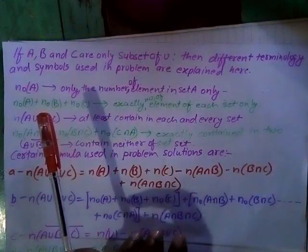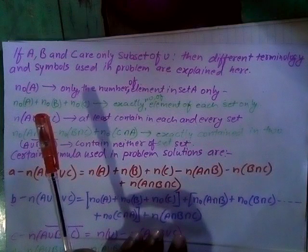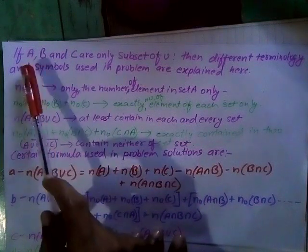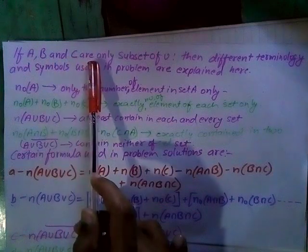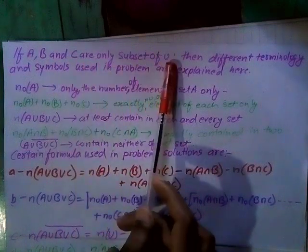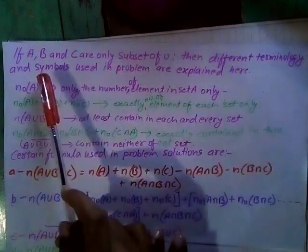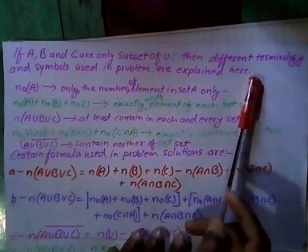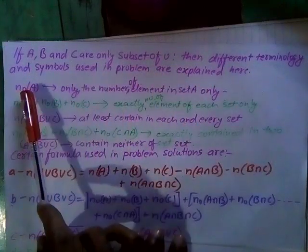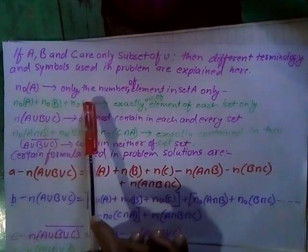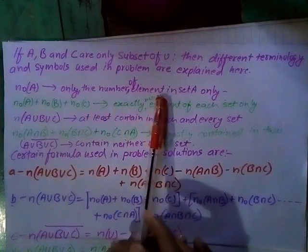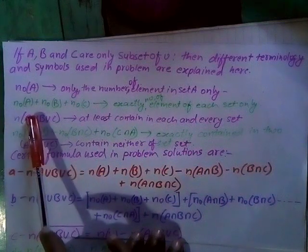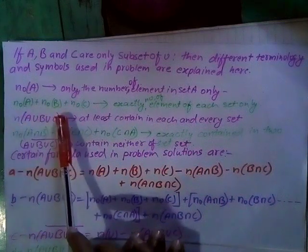In the next topic on sets, I am going to explain three sets A, B, C as subsets of U. Different terminology and symbols used in problems are explained here. N not A explains the number of elements in set A only.